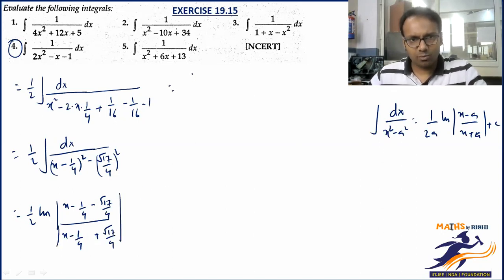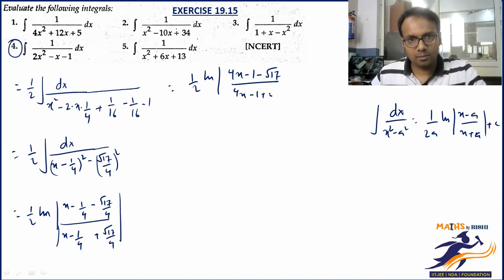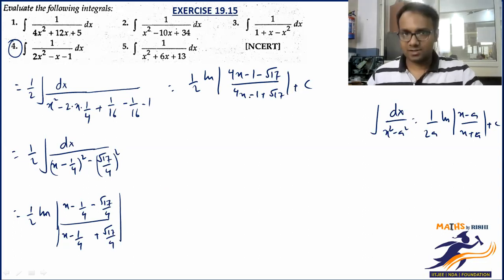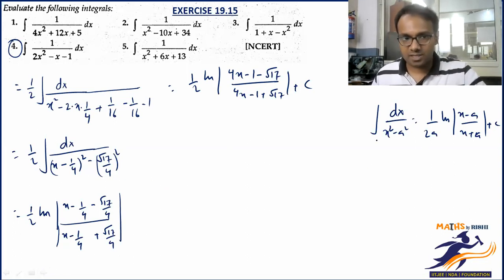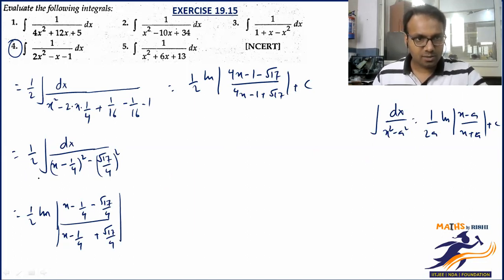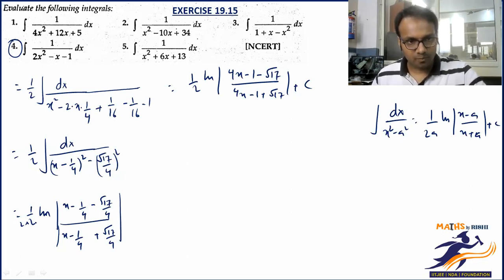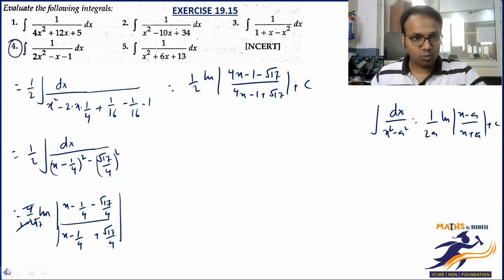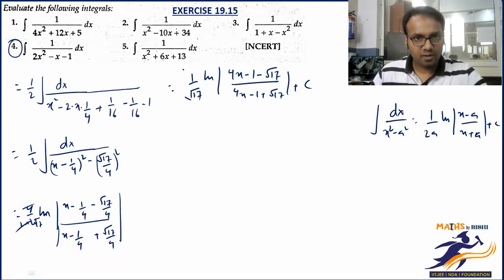So the answer you should easily write: (1/2) · log|(x - 1/4 - root17/4)/(x - 1/4 + root17/4)| and simplify. The final answer should be: log|(4x - 1 - root17)/(4x - 1 + root17)|. Let's check — also don't miss the 1/(2a) factor. With a = root17/4, we get 1/(2 · root17/4) = 2/(root17 · ... wait, let me redo: 1/(2a) with a = root17/4 gives 4/(2·root17) = 2/root17... Actually combining with the 2 that was common outside, it becomes 1/root17.